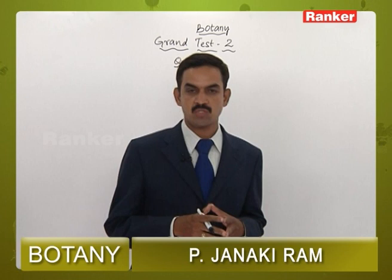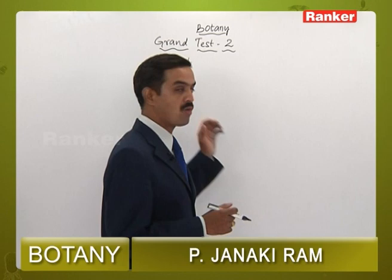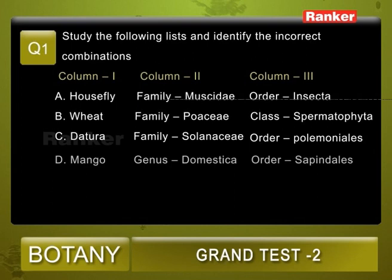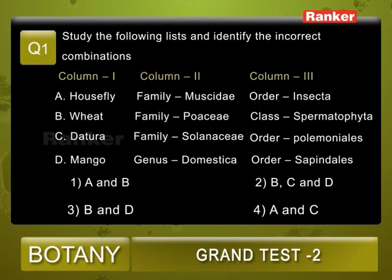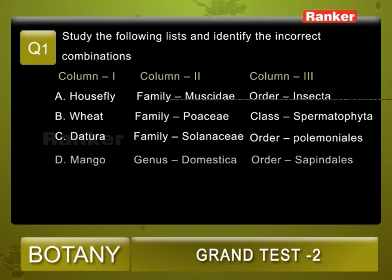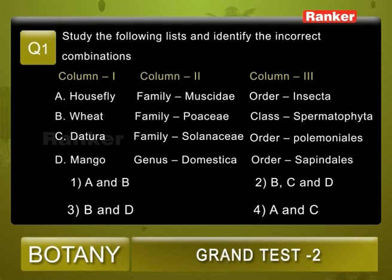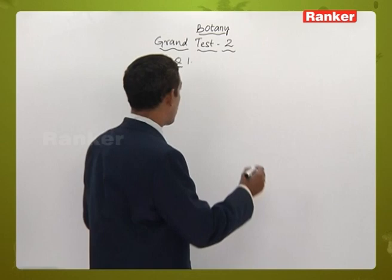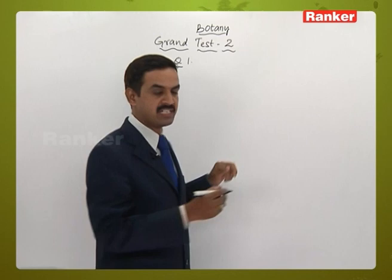Grand test number two in botany. Here are the 40 questions expected in the MSET botany exam. Question number one: study the following list and identify the incorrect combinations. Three columns have been given. The options are: one - A and B, two - B, C, and D, three - B and D, and four - A and C. We need to identify the incorrect combinations.